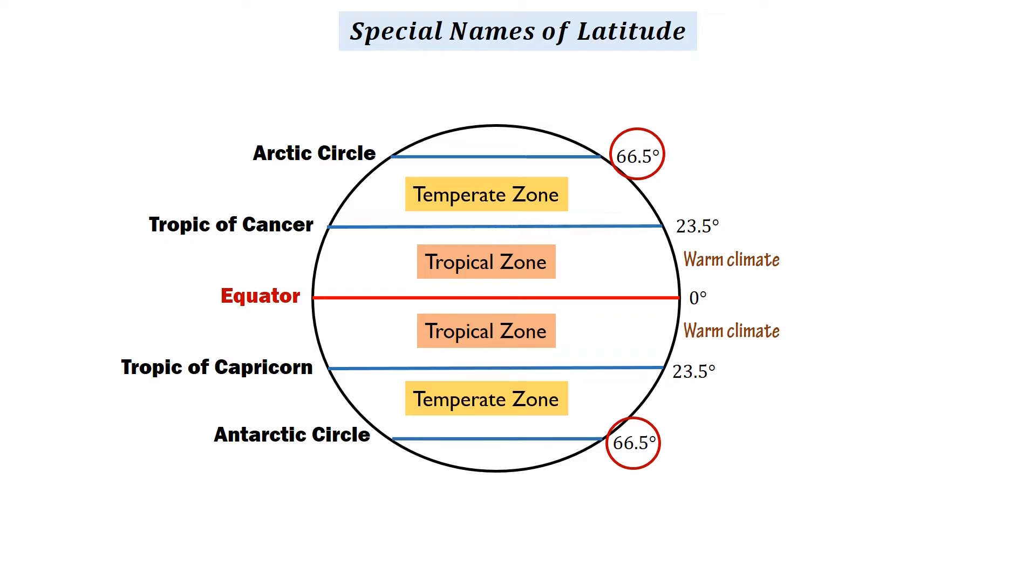The countries in these zones go through four seasons, such as winter, spring, summer, and autumn seasons. Finally, the areas within the Arctic and Antarctic circles are called polar zones that have a cold climate.